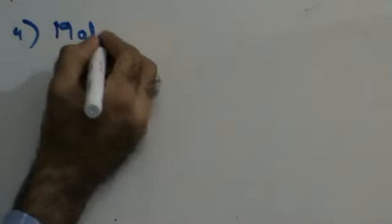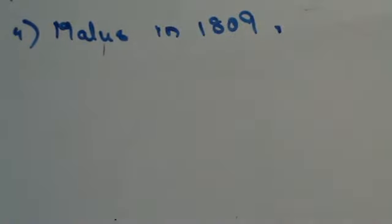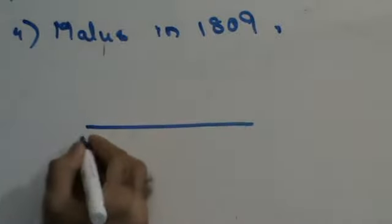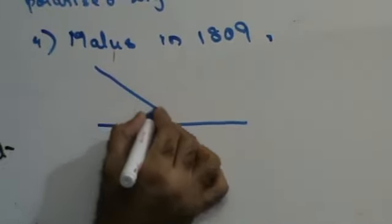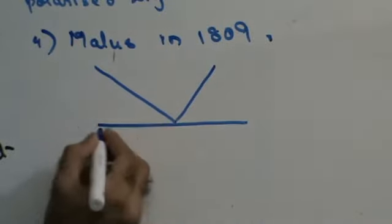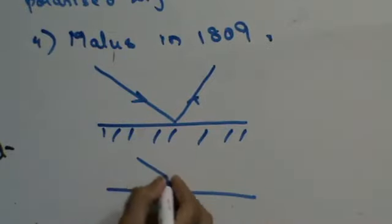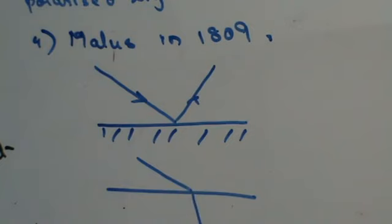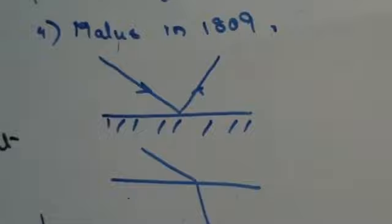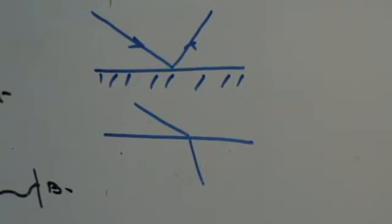There was a scientist by the name Malus. In 1809, he came up with the concept that when ordinary light is reflected from a surface, it becomes partially or completely plane polarized. When a ray of light is reflected from a surface of glass or water, the reflected light becomes partially or completely plane polarized. The extent to which it gets polarized will depend upon the angle of incidence.